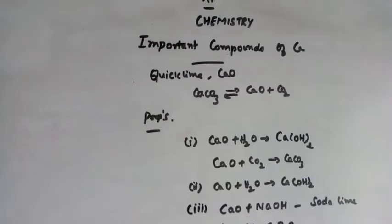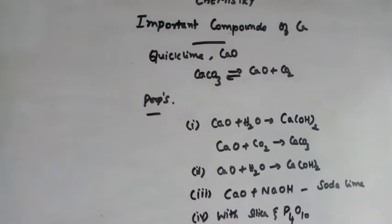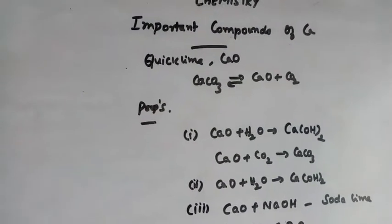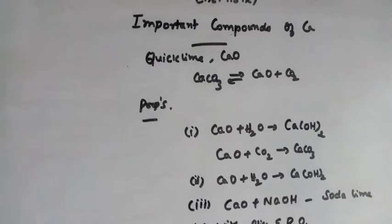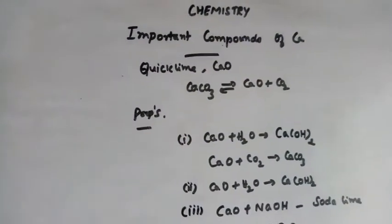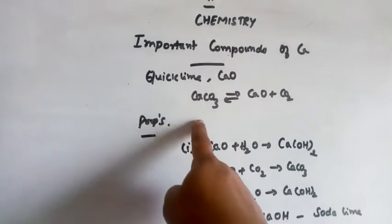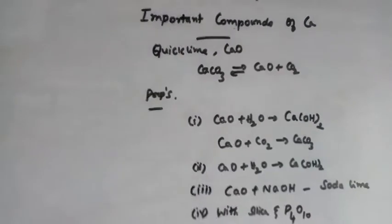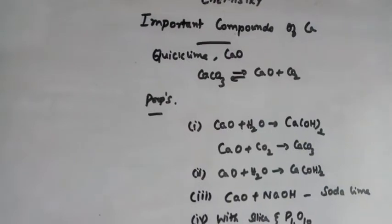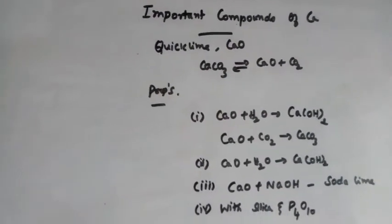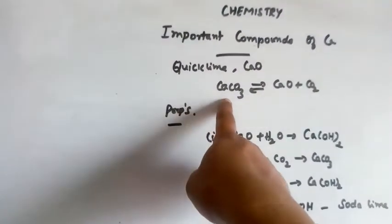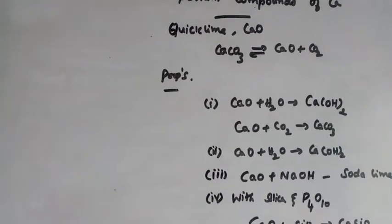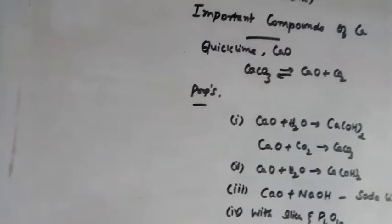Now let us see the important compounds of calcium. The first important compound is quicklime, which is nothing but calcium oxide. Quicklime is prepared by the decomposition of calcium carbonate. When calcium carbonate is heated at a temperature of 1070 to 1270 Kelvin, it decomposes to give quicklime, which is calcium oxide.